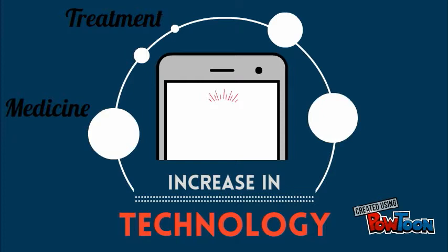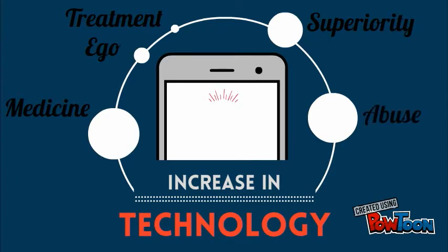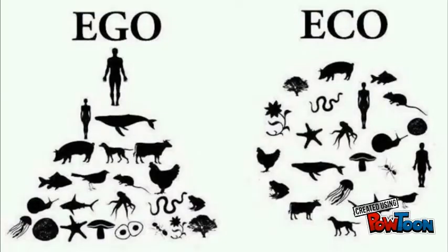However, if you look at it in the perspective of other animals, it may seem that humans have a rise in their ego because of the power that technology entails them. This can lead to feelings of superiority over other animals and that can lead to abuse of other animals.